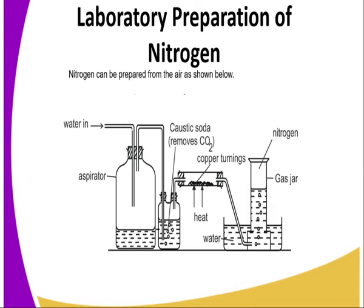The remaining part of air is passed through copper turnings, which absorbs or reacts with oxygen, leaving the remaining part of the atmosphere as nitrogen gas — the largest percentage. Using this process, you'll notice certain impurities present in the gas jar containing the nitrogen gas. These impurities may include inert gases such as argon, dust particles, and other gases present in the atmosphere.